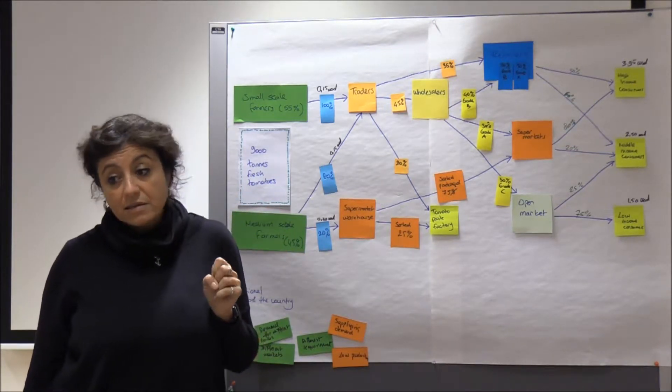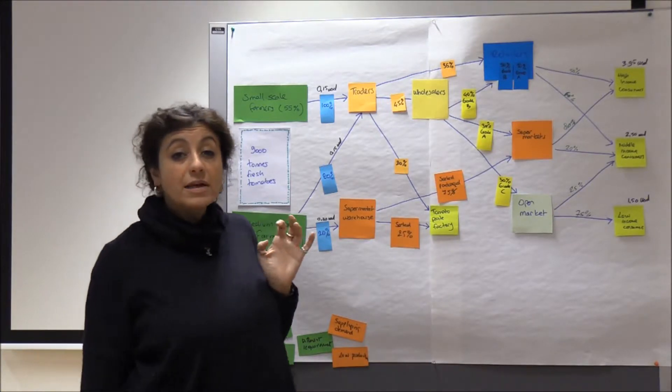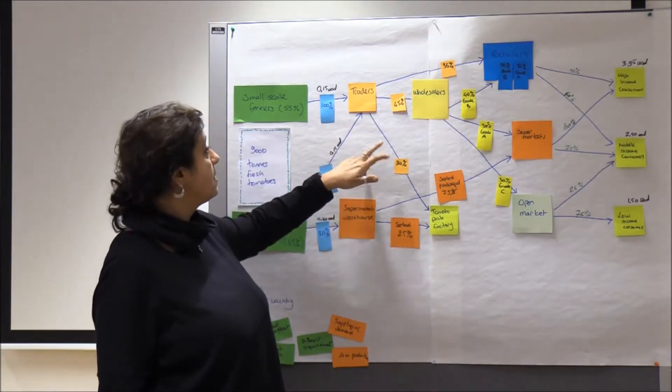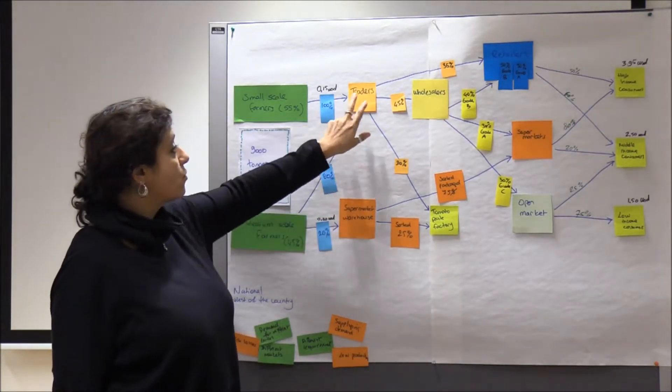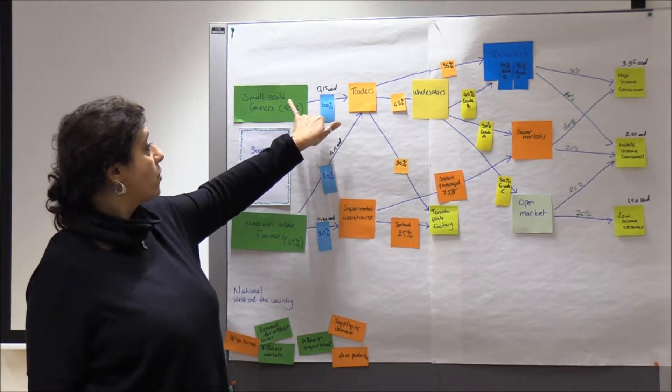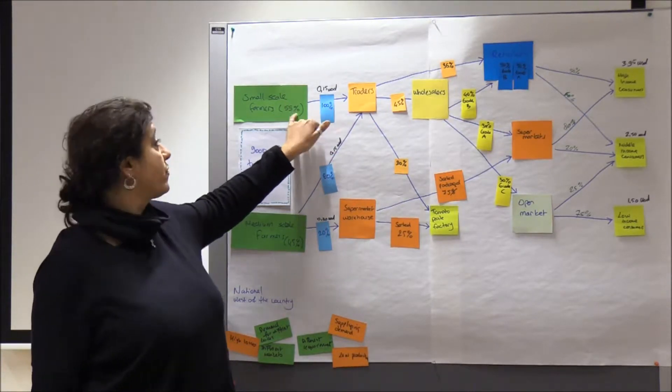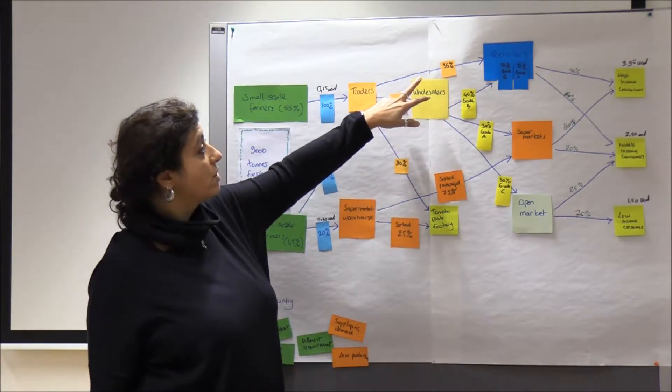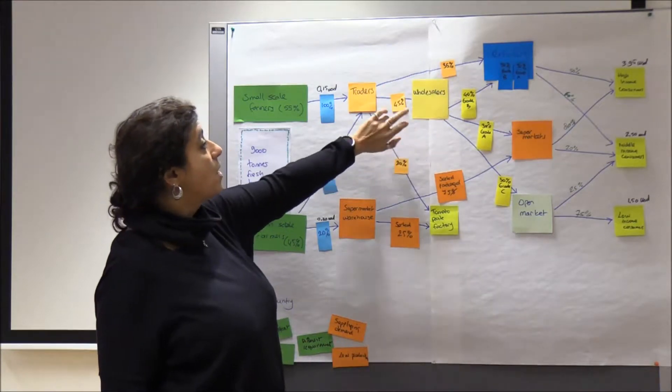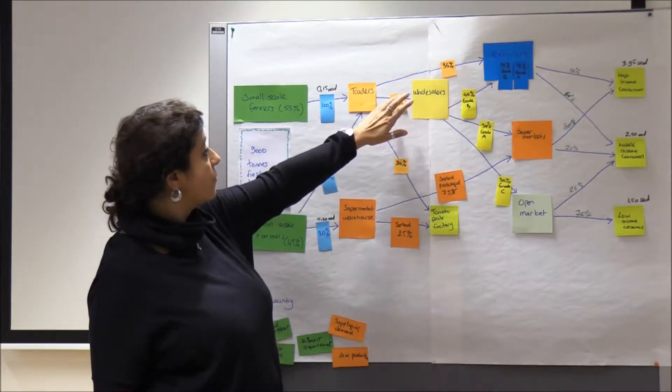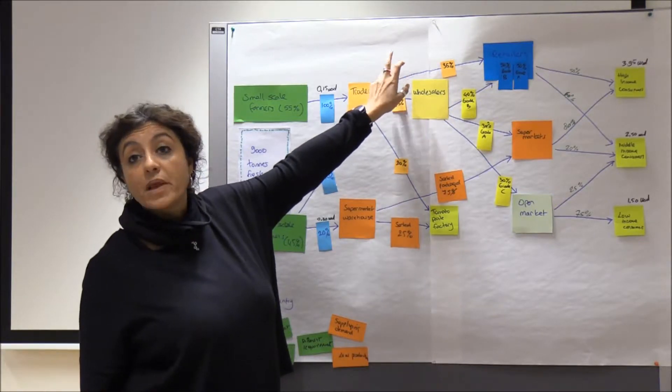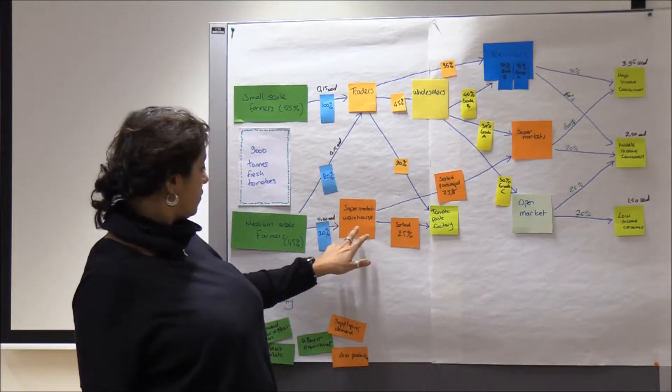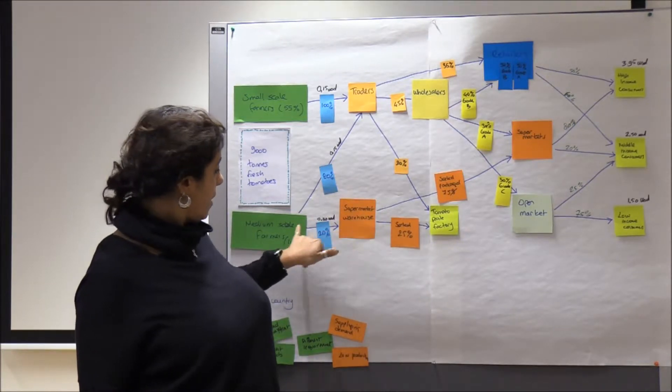Once I identified the actors, I tried to identify the value adding activities that they undertake. So it was all before doing all these lines, I tried to understand, okay, the trader buys directly 100% of the tomato that is produced from the small scale farmers. And then he sells 45% to the wholesalers and 35% of that produced to the retailers. While he does that, he has a kind of grading, he has a transporting as a value adding activity.